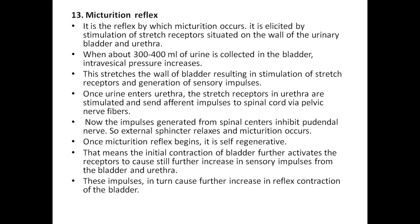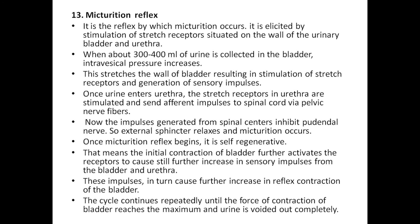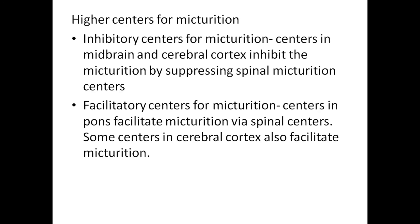These impulses in turn cause further increase in reflex contraction of the bladder. The cycle continues repeatedly until the force of contraction reaches the maximum and urine is voided completely. Higher centers of micturition include inhibitory centers in the midbrain and cerebral cortex, which inhibit micturition by suppressing the spinal micturition center. Facilitatory centers in the pons facilitate micturition via spinal centers, and some centers in the cerebral cortex also facilitate micturition.